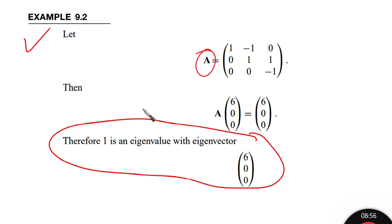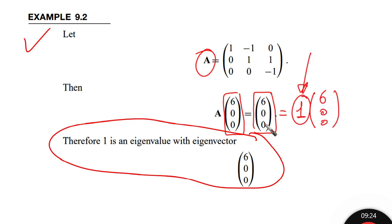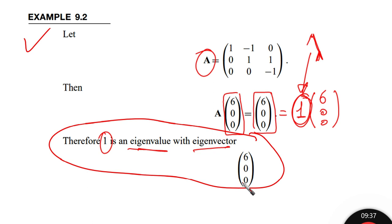For the next example, let A be the 3×3 matrix with entries [1,-1,0; 0,1,1; 0,0,-1]. Multiplying A by the vector [6,0,0] gives [6,0,0] — which equals 1 times [6,0,0]. Therefore, 1 is an eigenvalue with eigenvector [6,0,0].